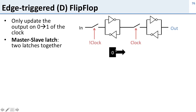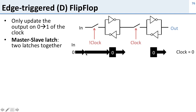Let's walk through this. Say we have zero in the first latch, zero in the second latch, and the output is zero. Our input is zero and our clock is zero. When the clock is zero, not-clock is one, so the first switch is closed and we can write into the first latch. But we can't send this value to the second latch because that switch is on clock, which is zero — so that switch is open. When the clock is low, we can write into the first latch but it doesn't pass through to the second one.